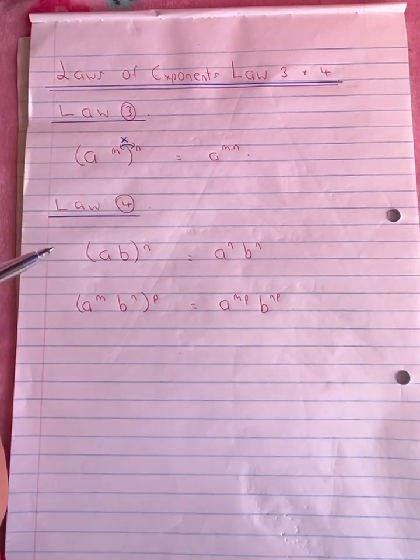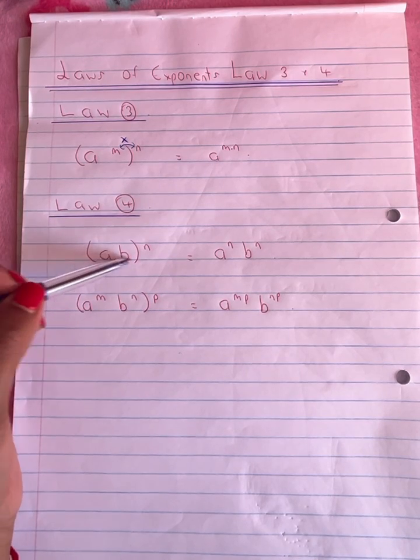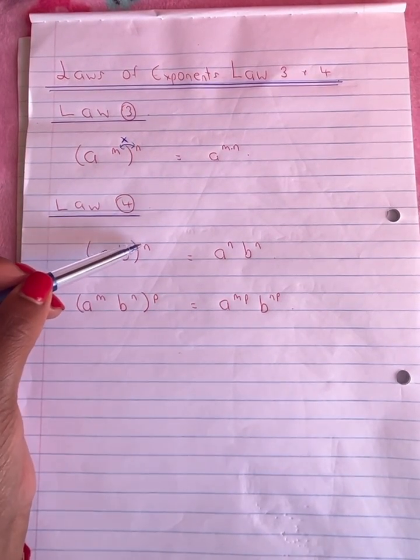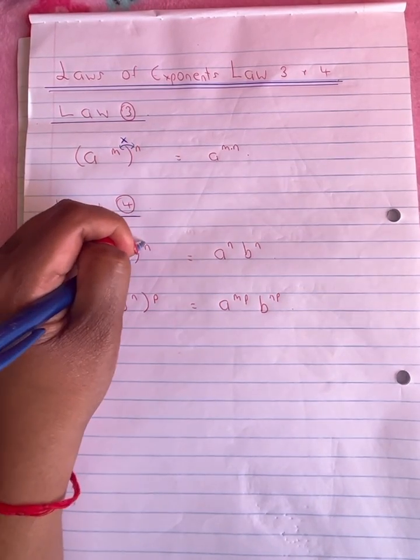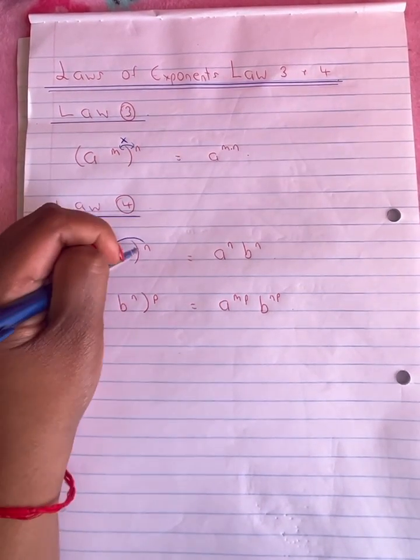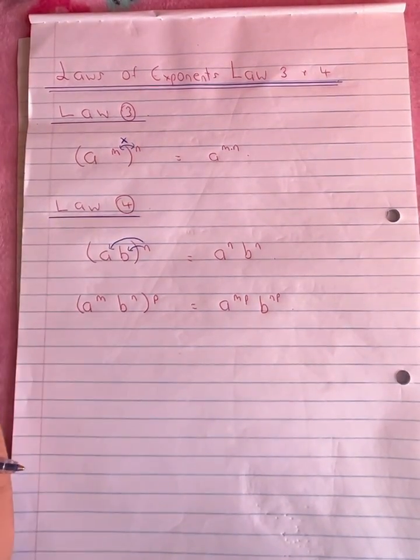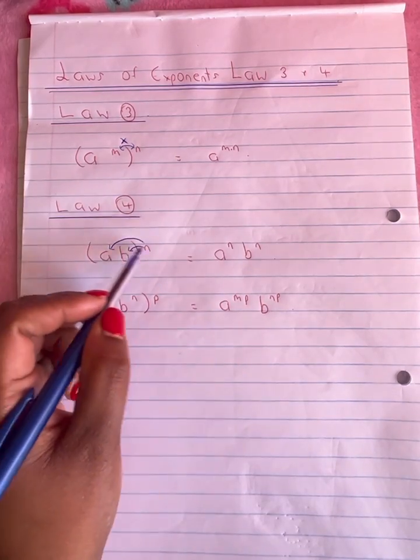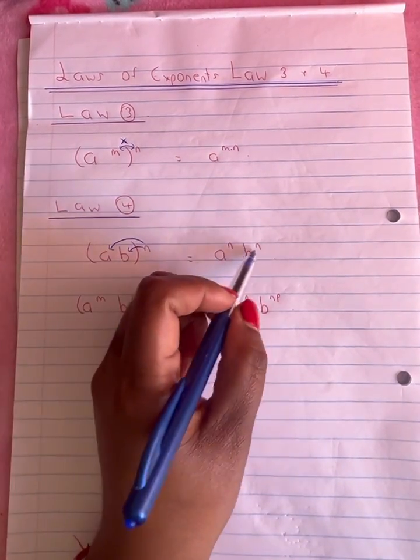Law 4 of exponents states that a times b as a base inside a bracket raised to a power outside the bracket. We are basically going to distribute the exponents to each of the bases inside the bracket. So the answer will be a to the power of n times b to the power of n.